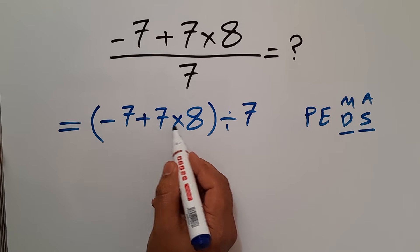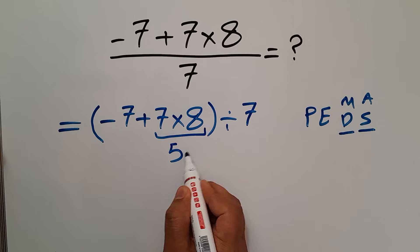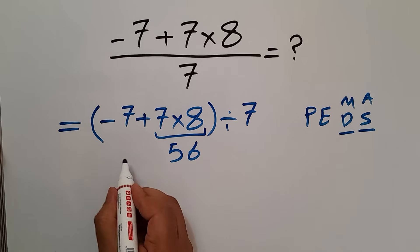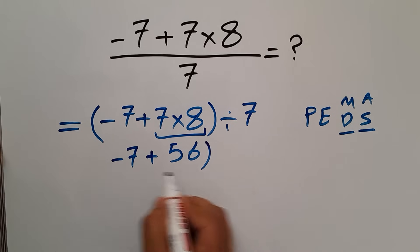So, first, we do this multiplication. 7 times 8 gives us 56. So, we have negative 7 plus 56 divided by 7.